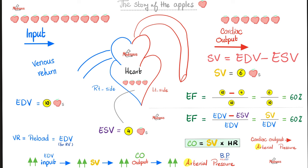If I gave you 10 apples and you ejected 6, the percentage ejected is 60% — that's the ejection fraction. In absolute terms, the stroke volume is 6 apples; in relative terms it's 60%. Ejection fraction equals stroke volume over end diastolic volume, which is EDV minus ESV over EDV — what you ejected over what I gave you in the beginning.